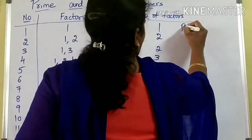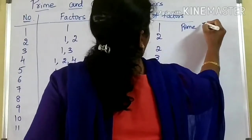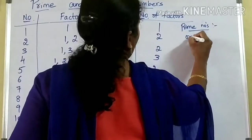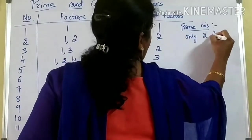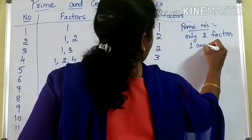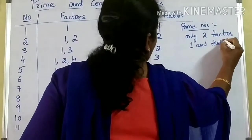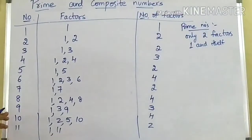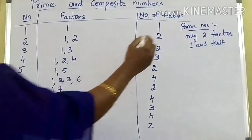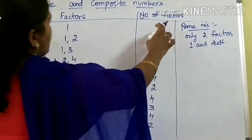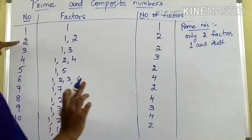So based on this number of factors, we are going to find which numbers are prime and which are composite numbers. First, I want to discuss what are prime numbers. Numbers which are having only two factors — that is one and itself. So prime numbers are having only two factors, the factors are one and itself.